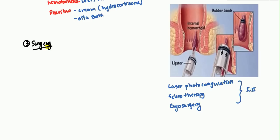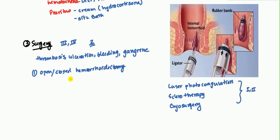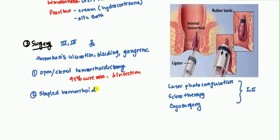Surgery is reserved for stage three or four, sometimes stage two if conservative and minimally invasive management failed, and also indicated for thrombosis, ulceration, bleeding, or gangrene. The common surgeries are hemorrhoidectomies — either open or closed — with about a 95% cure rate and a very low infection rate. There is also a stapled hemorrhoidectomy, which has a higher recurrence rate but less pain and a shorter hospital stay, so some patients prefer it.